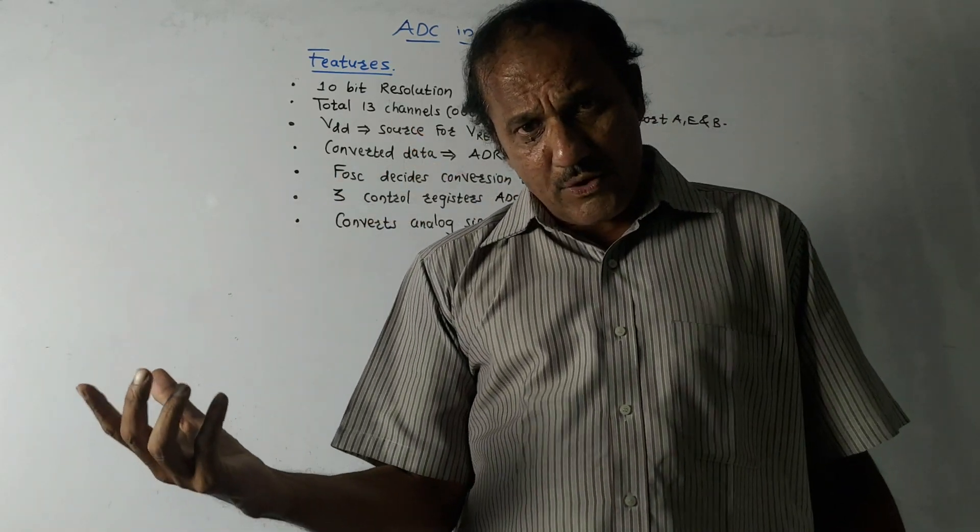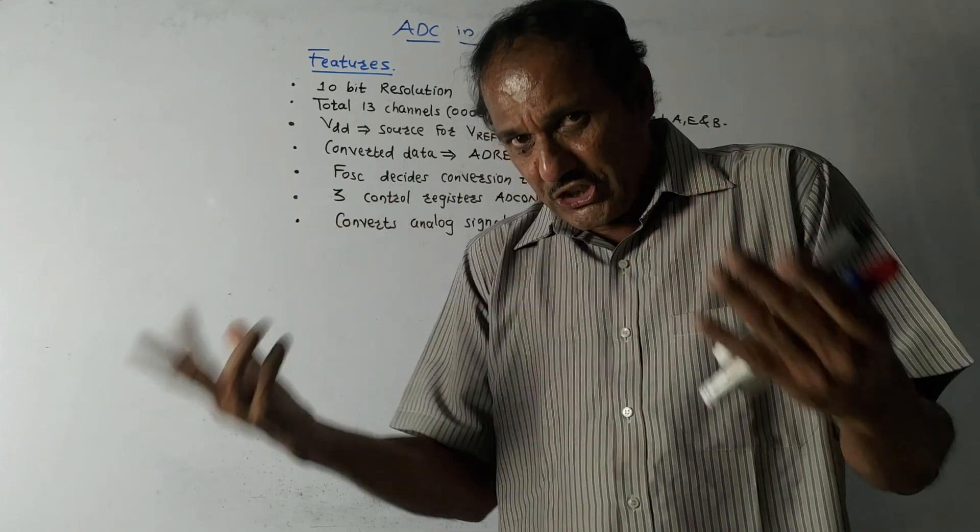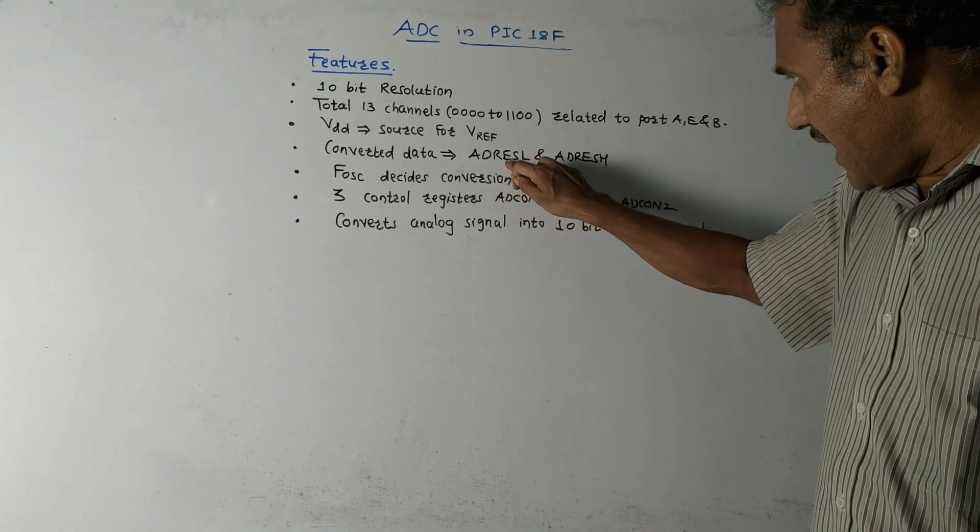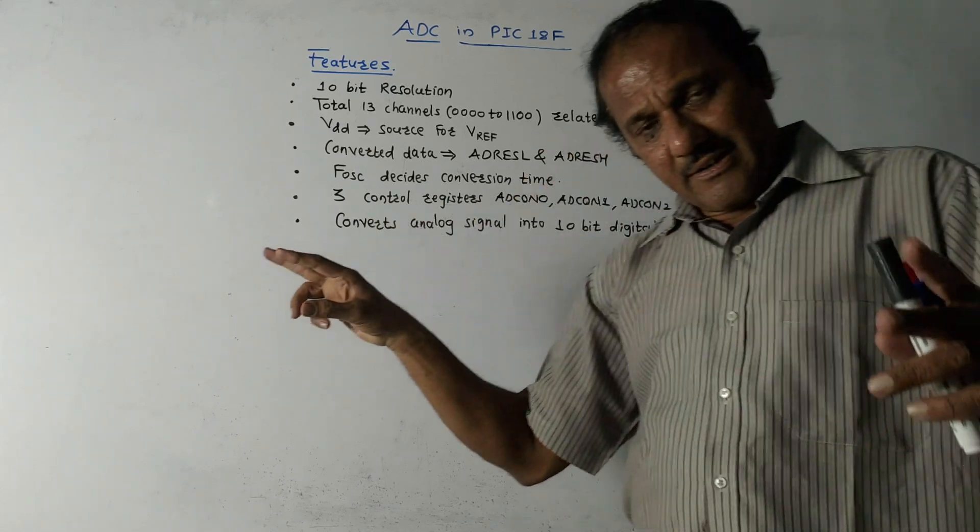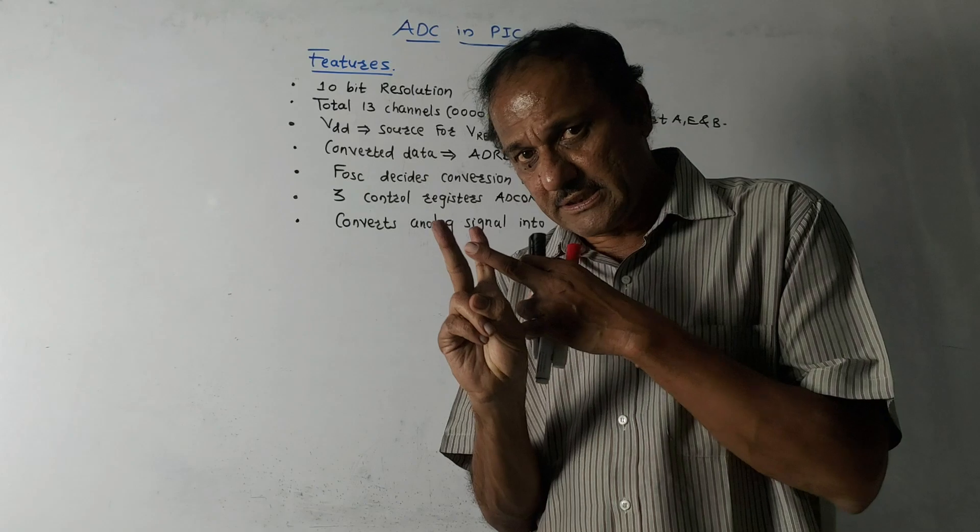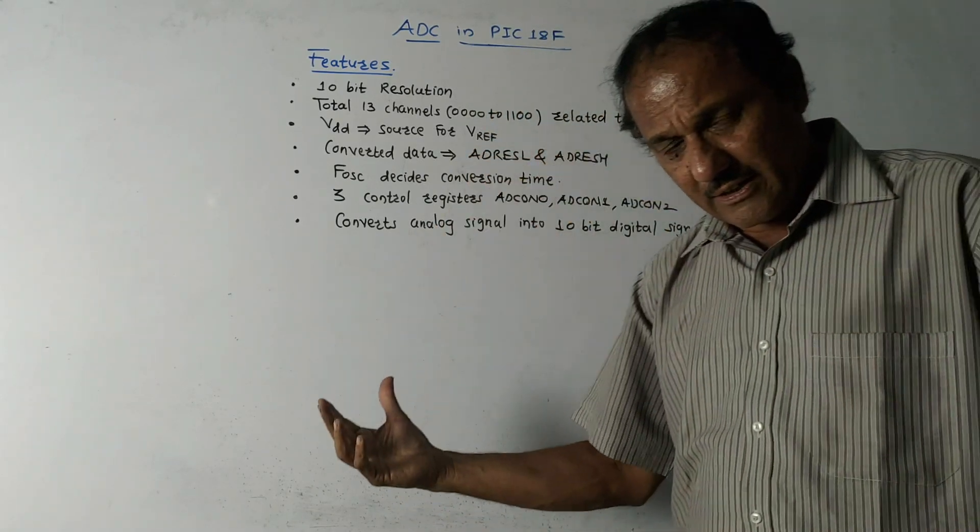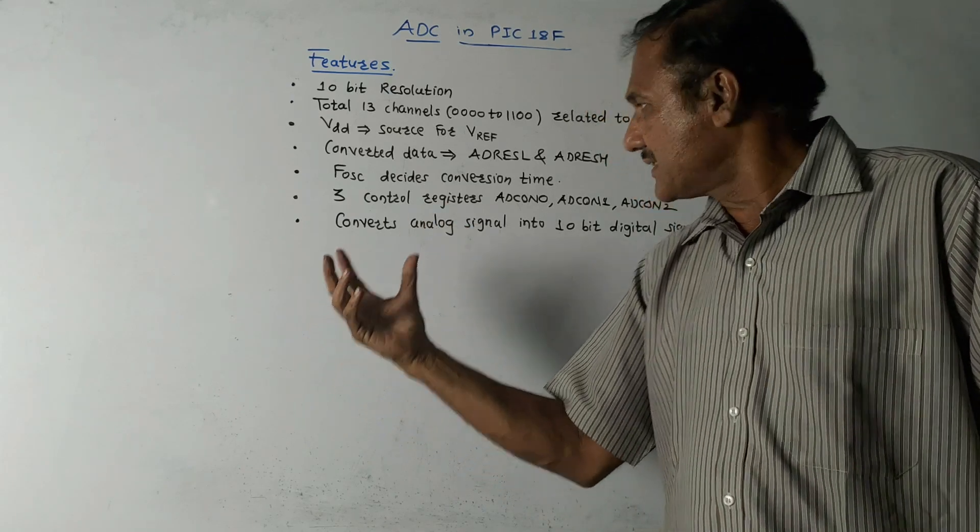The converted data, we already discussed, is stored into two registers: ADRESL and ADRESH. Actually, these are individually 8-bit registers, so total there will be 16-bit registers. The other bits, after storing the converted data, the remaining bits are unused.